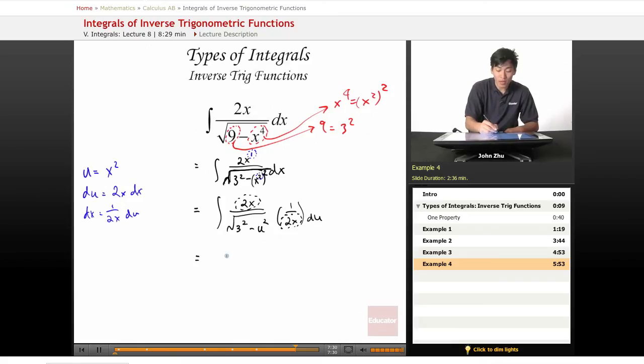And we're left with 1 over root 3 squared minus u squared du, which is just the property for sine. So inverse sine.